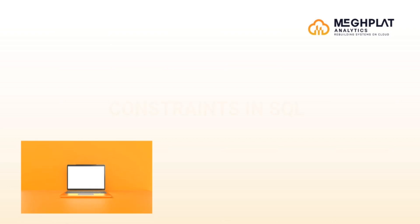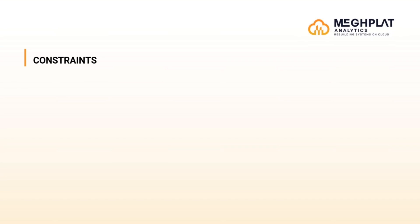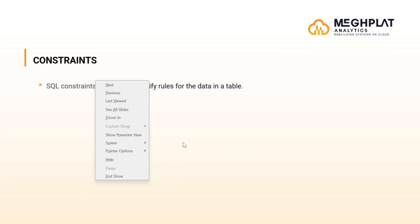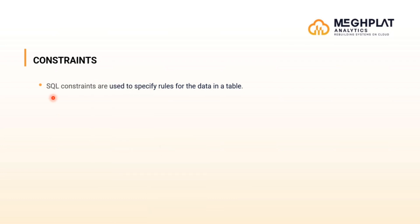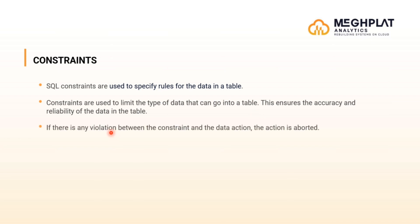In this video, we learn about the constraints in SQL. SQL constraints are used to specify rules for the data in a table. Constraints are used to limit the type of data that can go into a table. This ensures the accuracy and reliability of the data in the table. If there is any violation between the constraint and the data action, the action is aborted.